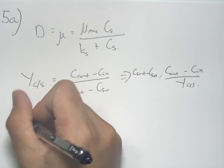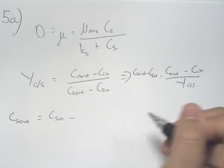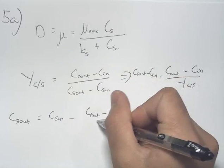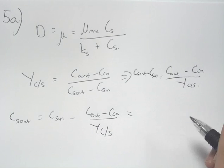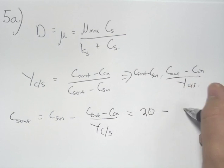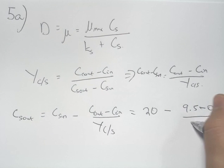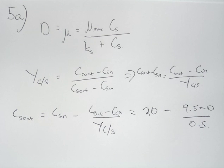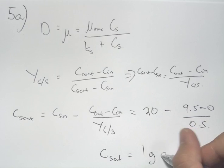The concentration of substrate out equals the concentration of substrate in, minus the cell concentration out minus cell concentration in, divided by the yield coefficient — because substrate is being consumed. Using the values from the question, substrate in is 20 g/dm³, cell concentration out is 9.5 g/dm³, and cells in is zero, giving a substrate concentration out of 1 gram per decimetre cubed.